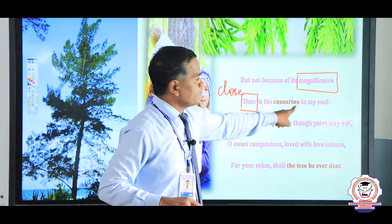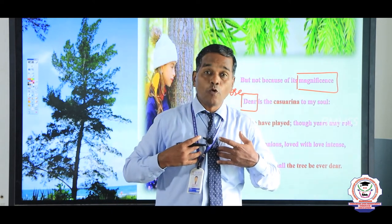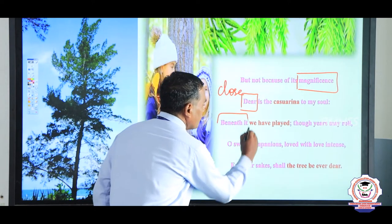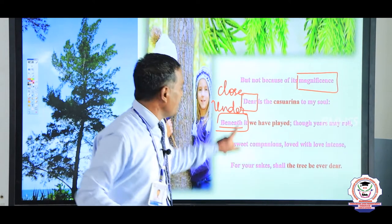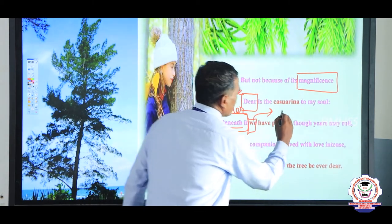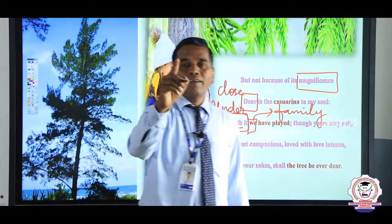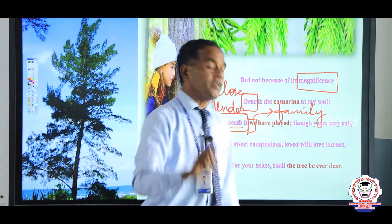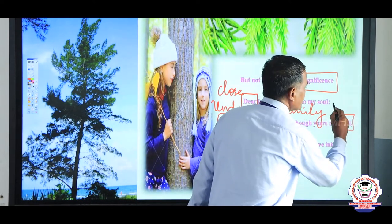The tree is dearer to her soul — her atma. 'Beneath it we have played' — beneath means under. 'We' refers to the family members, especially her brother and sister. The theme here is the lost childhood memories. 'Though years may roll' — 'role' means pass; many years have passed.